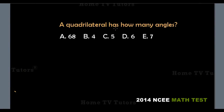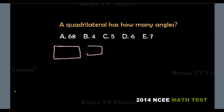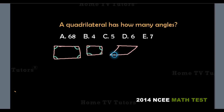A quadrilateral has how many angles? A quadrilateral is a four-sided shape — it could be a rectangle, a square, a rhombus, a parallelogram, or a trapezium. So a quadrilateral has four angles. The answer option B is the right answer.